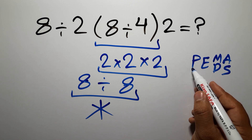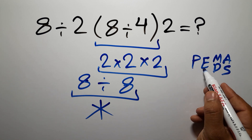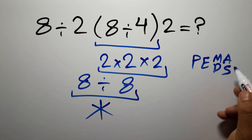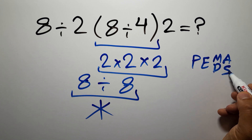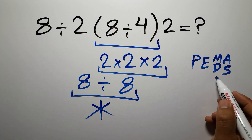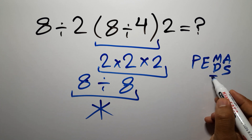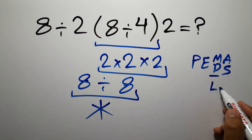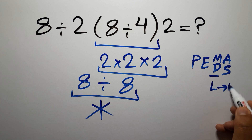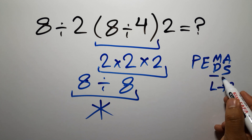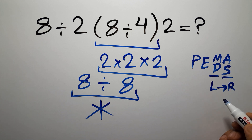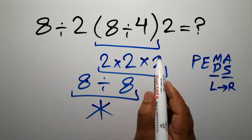First we have to do parentheses, then exponents, then multiplication or division, and finally addition or subtraction. Remember that multiplication and division have equal priority, and we have to work from left to right, and the same applies to addition and subtraction.